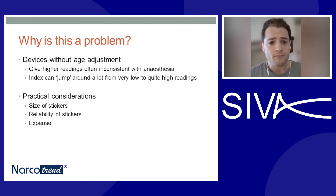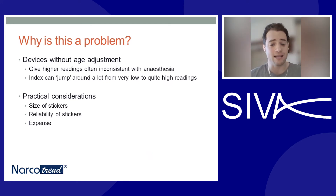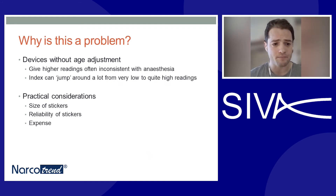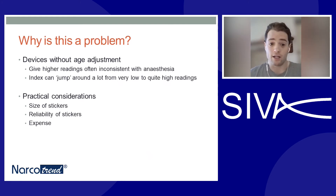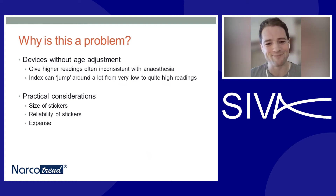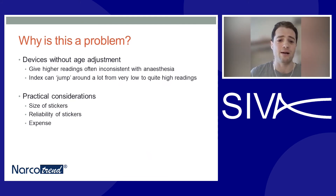So why is this a problem? Devices without age adjustment can often give quite high readings that are inconsistent with anaesthesia and out of keeping with the clinical picture of the child. The index value can also jump around a lot, switching from quite low to quite high readings without any particular clinical change in the child. There are also practical considerations: the size of stickers is often poorly designed for a child's head, leaving very little real estate space. The reliability of the stickers can be quite variable, sometimes requiring several attempts to get one that sits well. Finally, some paediatric stickers are more expensive than their adult counterparts, which is important to consider in the current economic environment.